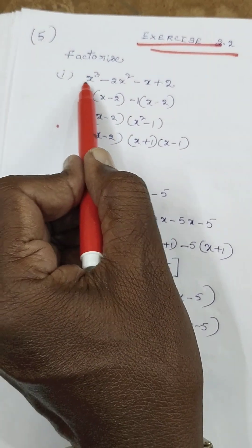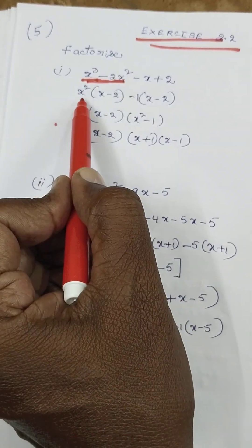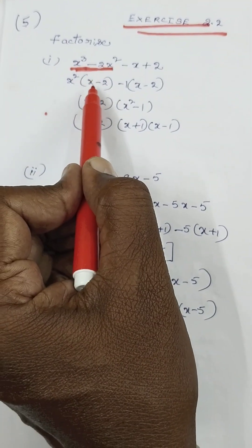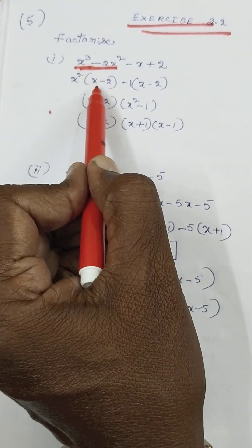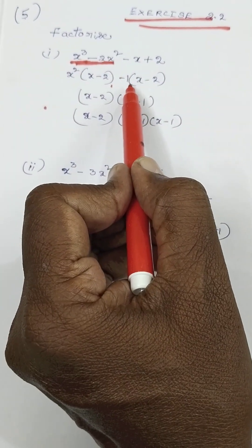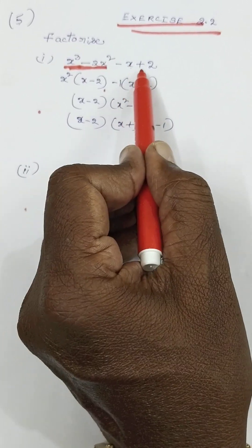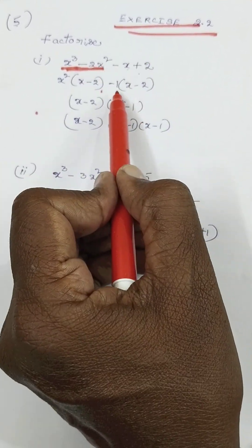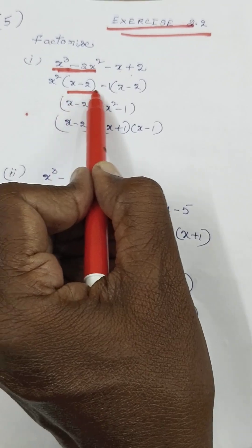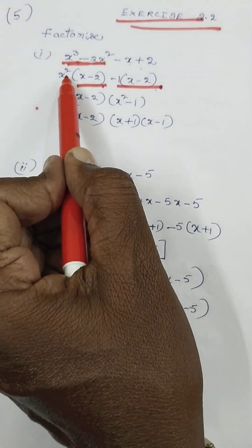So, in this term and in this term — two terms — we have to take out the common factor. x squared is common in the first two terms, leaving x minus 2. Then take common factor minus 1 from the next two terms, and it becomes x minus 2 as well. So on both sides x minus 2 is common. Remove x minus 2.